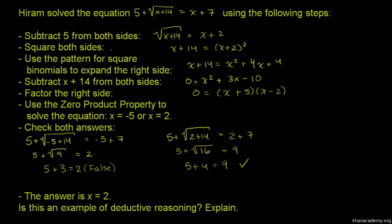Hiram solved the equation 5 + √(x+14) = x + 7 using the following steps. The first step is to subtract 5 from both sides.